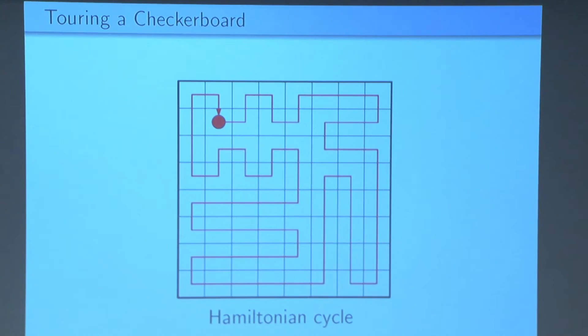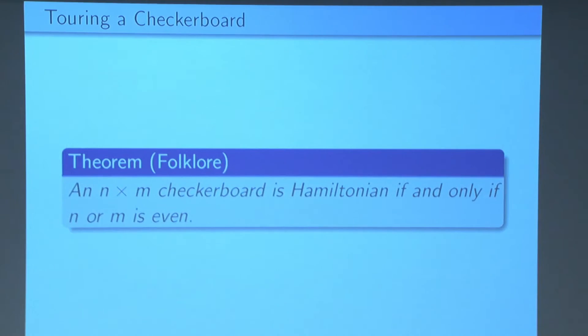But for example, the 7x7 checkerboard turns out to be not Hamiltonian, the 7x5 checkerboard is not Hamiltonian either. In general, it's relatively simple to see that, aside from trivial cases when n or m is 1, an n by m checkerboard is Hamiltonian if and only if either n or m or both of them are even.